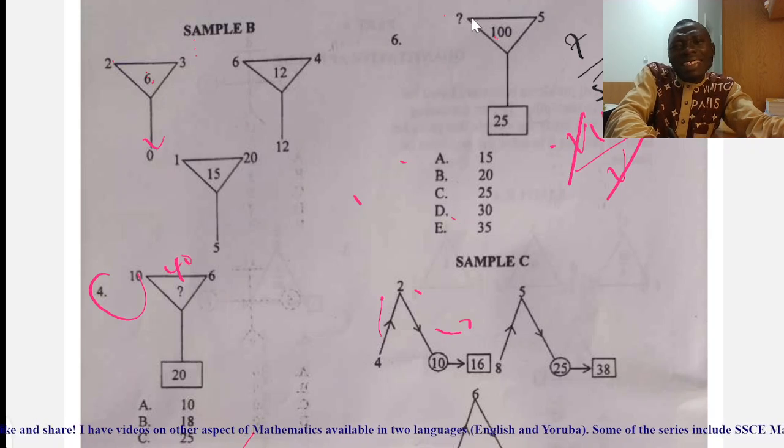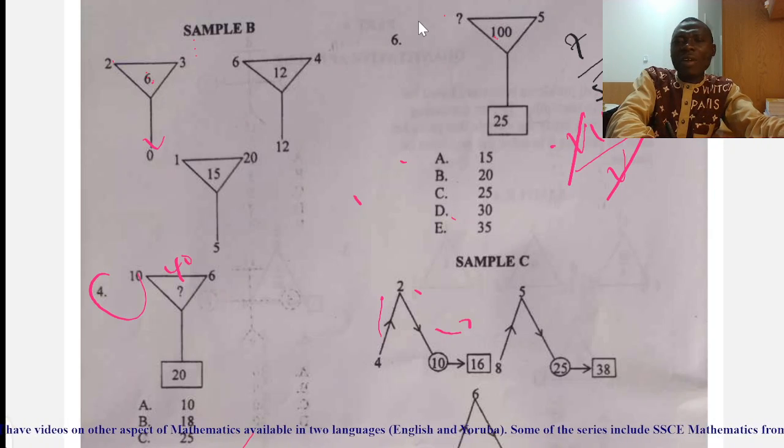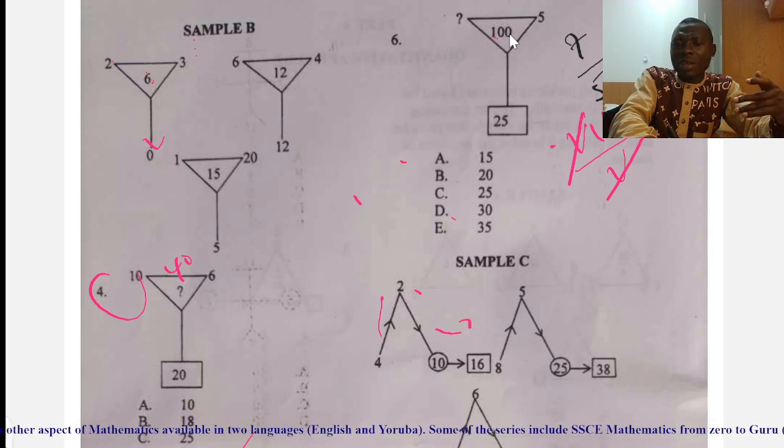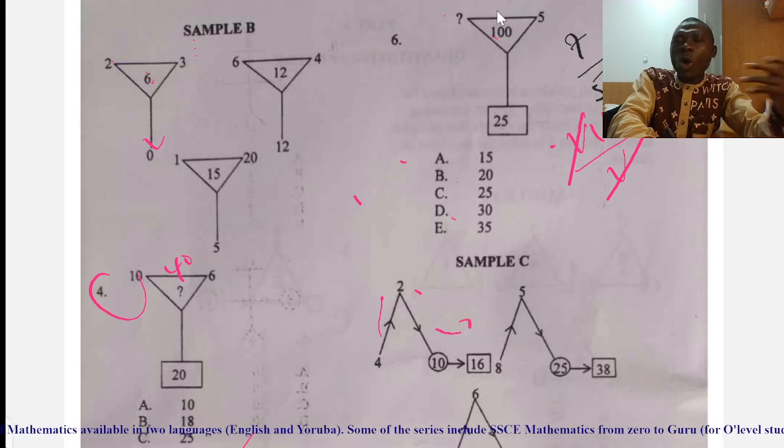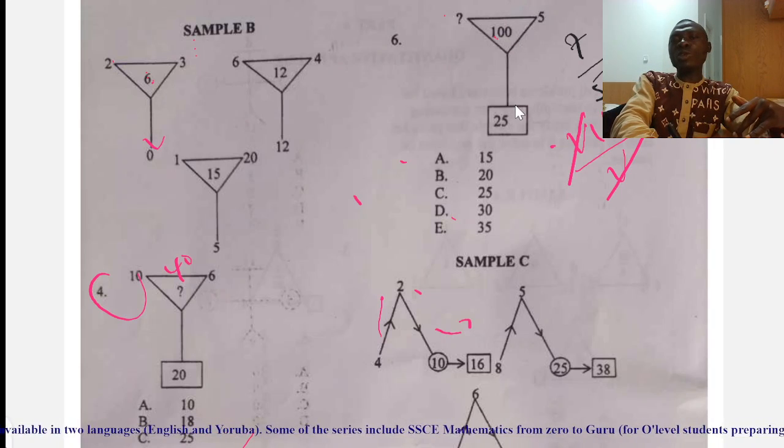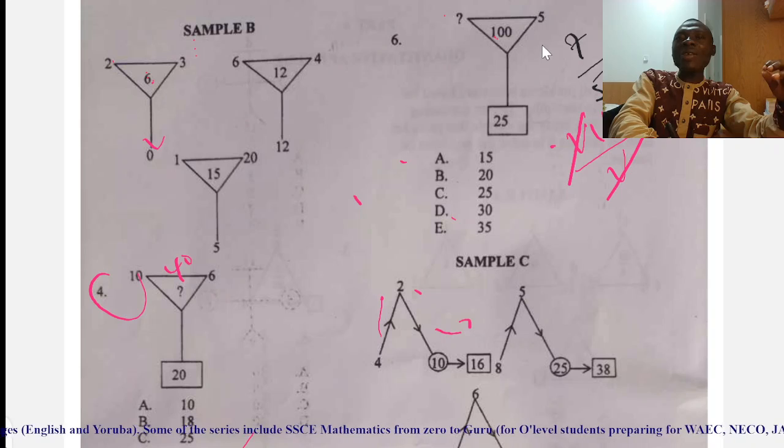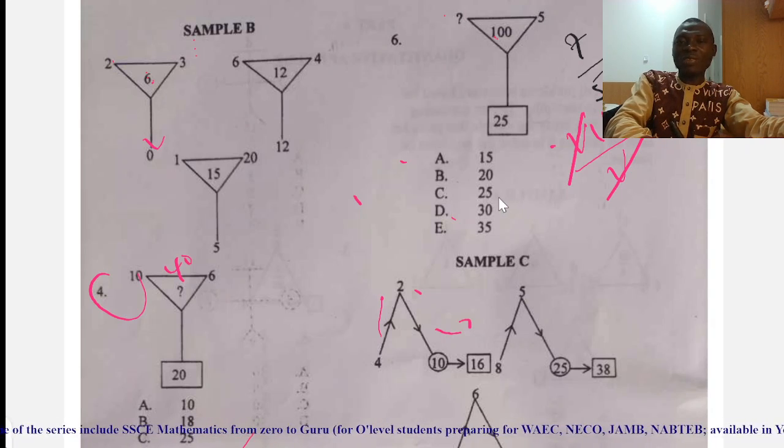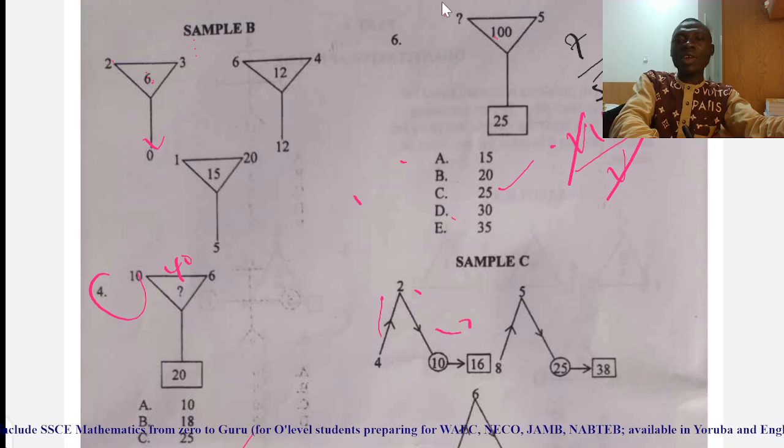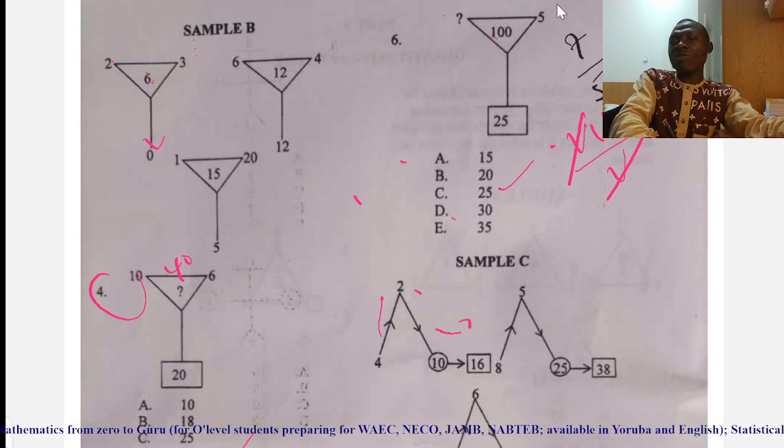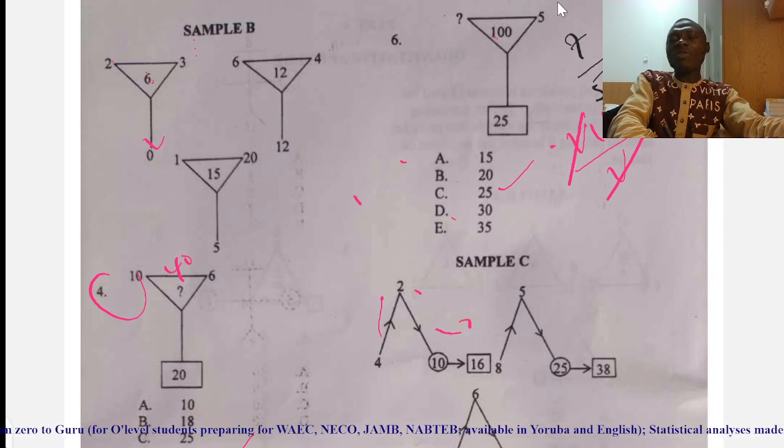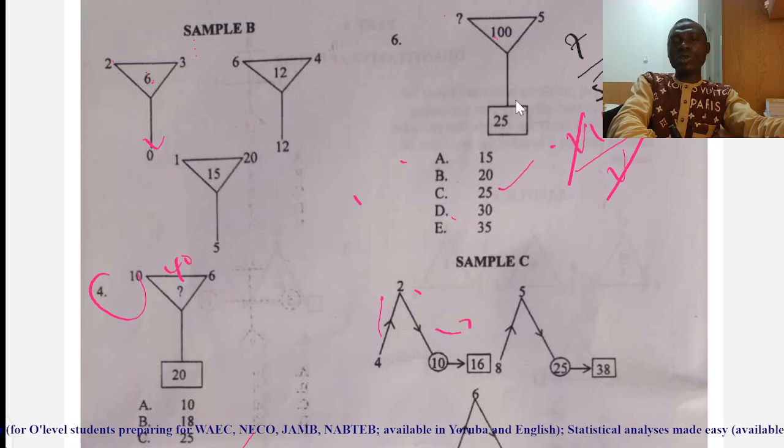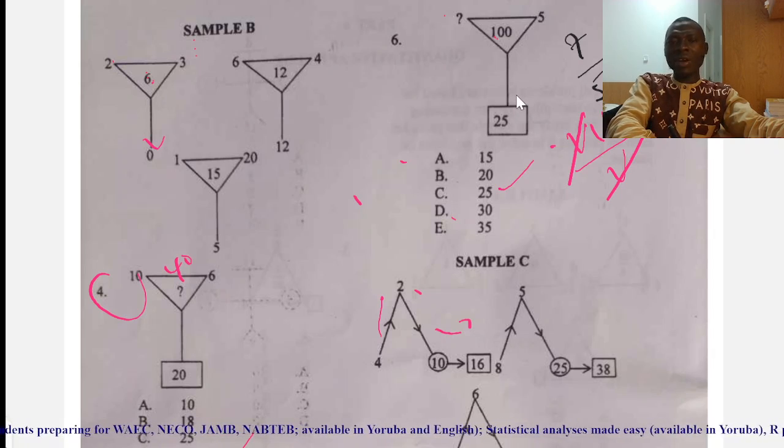What am I going to subtract 100 from that will produce 25? That is 125. And what are you now going to multiply by five to give you 125? I think that is 25. Then 25 multiply by five, will give me 125. And 125 minus 100 will produce 25.